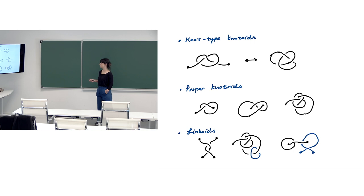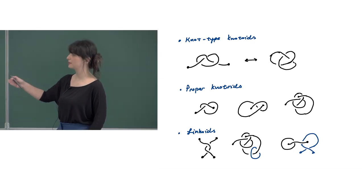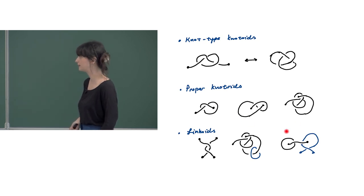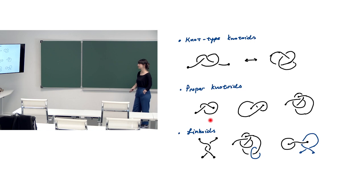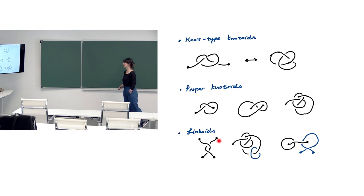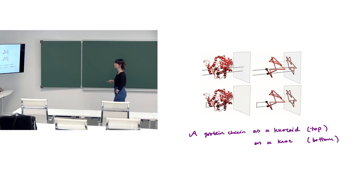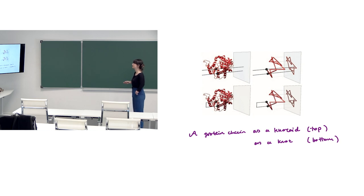We may extend knotoids to linkoids. Linkoids may contain circular components or knot components, or they may have a finite number of knotoid components. We can define a linkoid as a union of some number of knotoid components and circular components. The theory extends to linkoids.